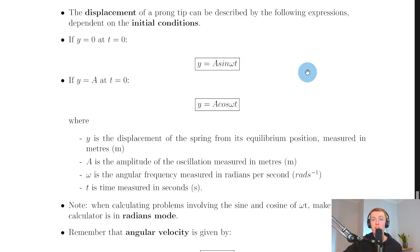We use sine if the object starts at its equilibrium position at time t equals zero, and we use cosine if the object starts at its maximum displacement from the equilibrium position at time t equals zero.